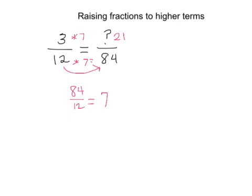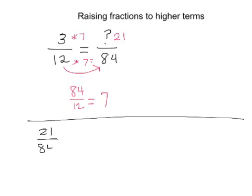Now you can always check this. If I have 21 over 84 and I reduce this by dividing 7 out of the top and bottom, that would give me 3. And if you don't remember, just do 84 divided by 7 and you'd get 12, which matches what I started with.